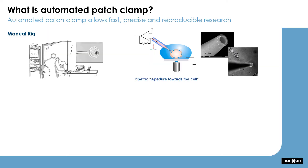In conventional patch clamp, a small glass pipette is brought to the cell surface and a tight seal in the order of 1 gigaohm or more is made between the cell membrane and the glass of the pipette tip. Following this, the patch of membrane stuck in the hole can be broken to access ion channel activity occurring across the whole cell membrane.